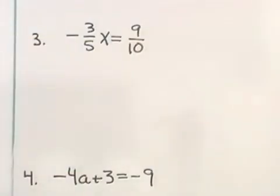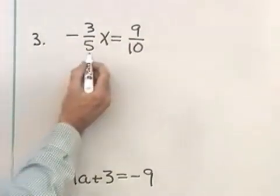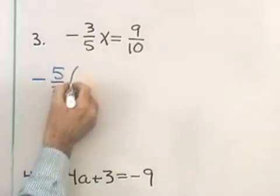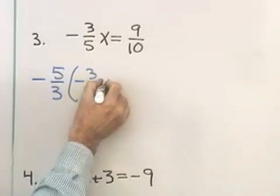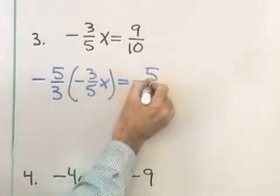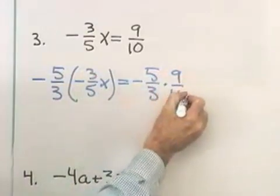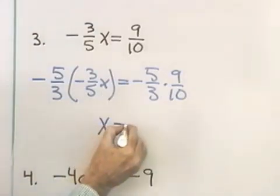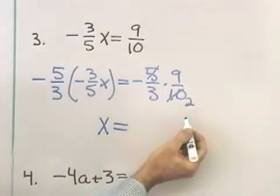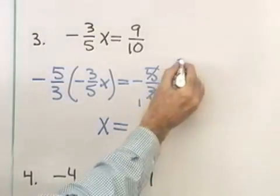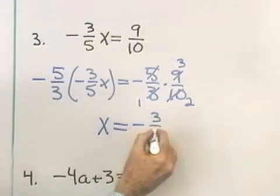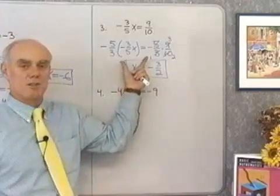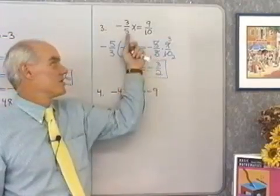Here's another one. Negative 3/5 x is equal to 9/10. I'll multiply both sides by the reciprocal of negative 3/5, which is negative 5/3. Negative 5/3 times negative 3/5 is 1, times x is x. Then I divide out the common factor 5 and the common factor 3, and I end up with negative 3/2 as the solution.